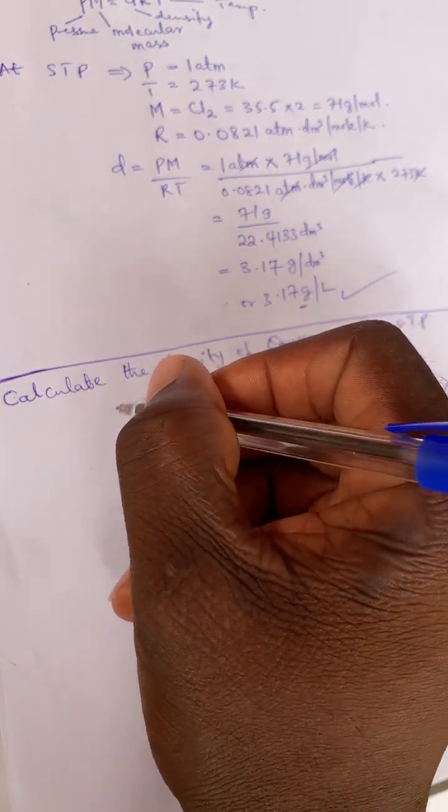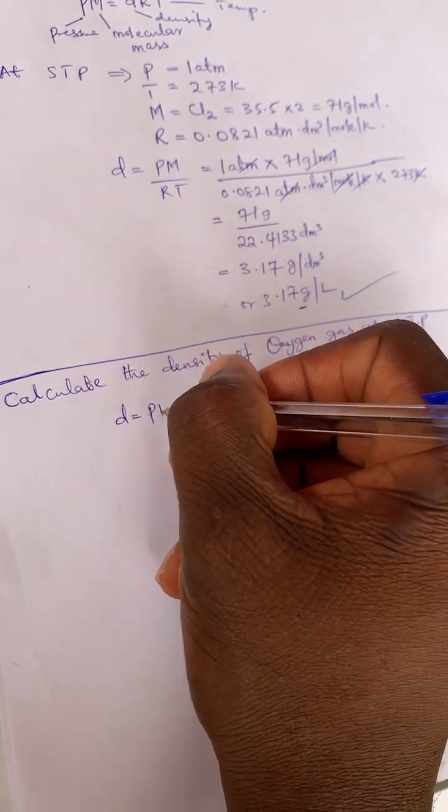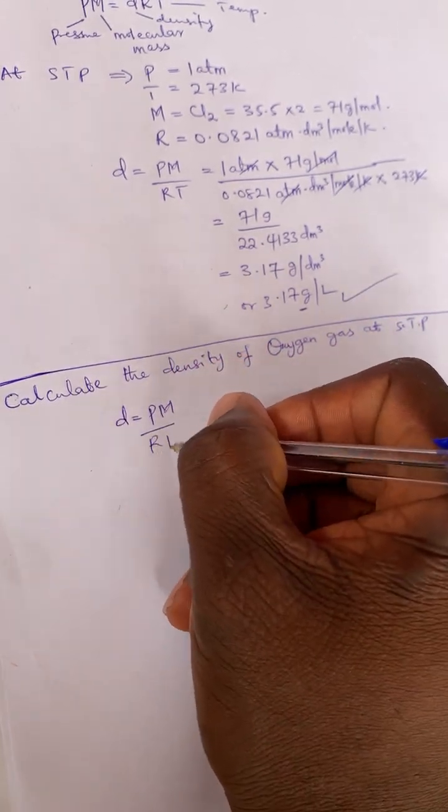If you have done that, then follow me. We have also that D is equal to PM over RT.